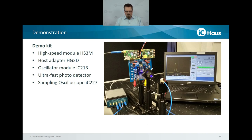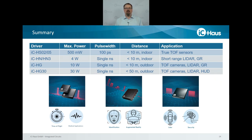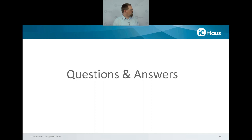To summarize: ICHS drivers allow ultra-short pulse generation for time of flight distance measurement or certain medical applications. Other time of flight applications using indirect time of flight measurement principles can also be served by single-nanosecond pulse laser drivers from the ICHN or ICHG families. That's all for today — back to you, Henrik, for the Q&A.